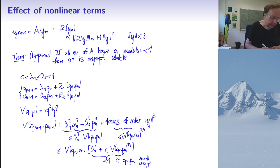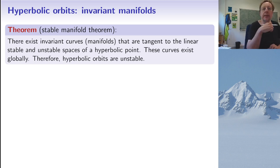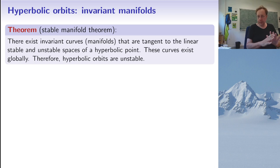Now, what happens in the hyperbolic case with nonlinear terms? The key result is the stable manifold theorem, which says that there exist invariant curves — manifolds in higher dimensions — tangent to the linear stable and unstable spaces of the hyperbolic point. These curves exist globally, and therefore hyperbolic orbits are unstable even in the nonlinear case.